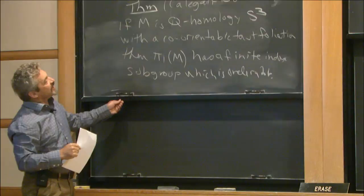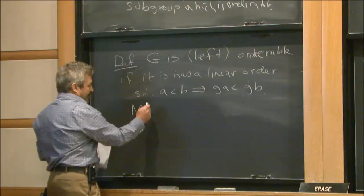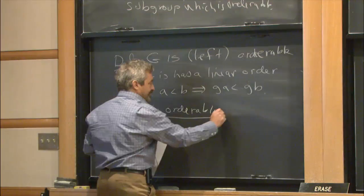The proof involves inventing the universal circle and constructing an action. I want to just talk about a three-manifold being orderable if its fundamental group is.